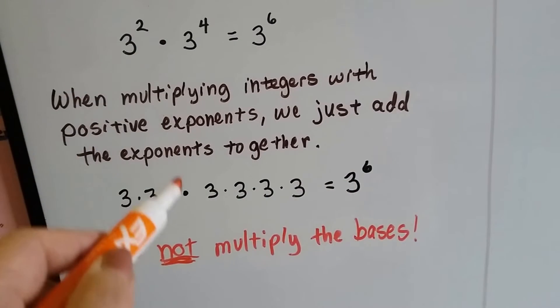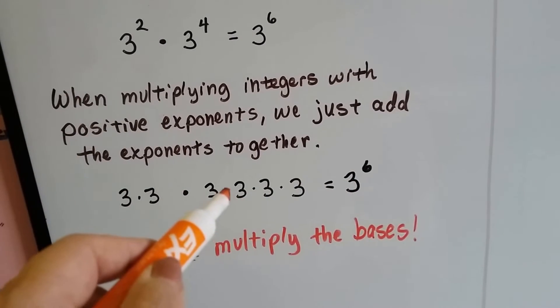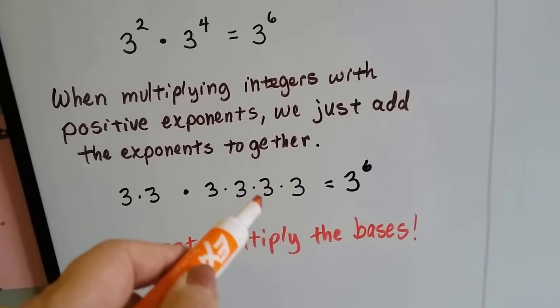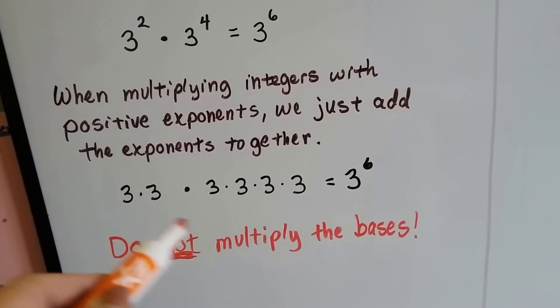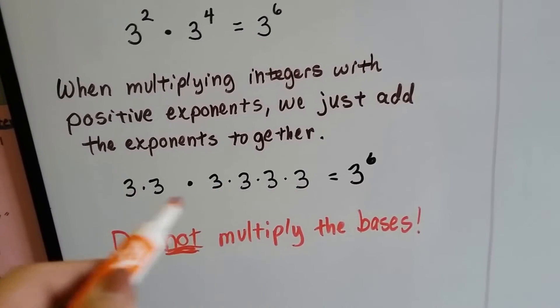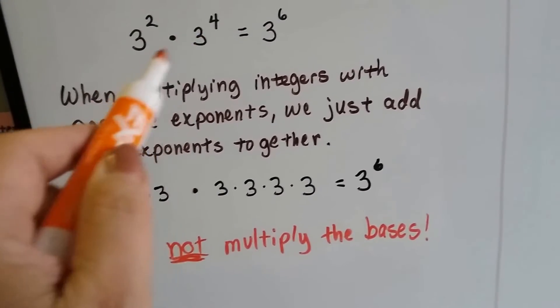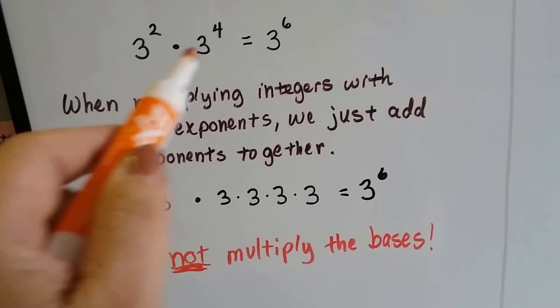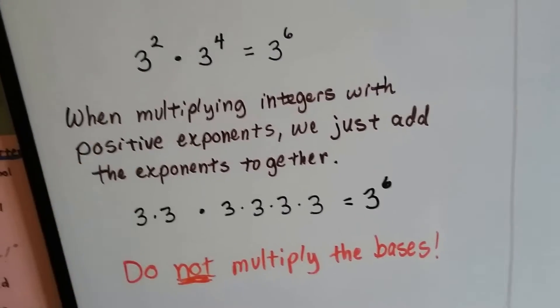This dot is no different than that dot or that dot or that dot — it all means multiply. So we don't multiply the bases when they're the same.